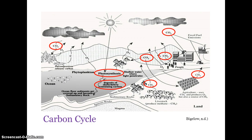Carbon is the fundamental building block of life and the fourteenth most abundant element by weight at 0.032% of total Earth mass. The carbon cycle has a gaseous phase including carbon dioxide (CO₂) and methane (CH₄). Carbon dioxide is taken in during photosynthesis and is respired by almost all organisms. Carbon also regulates the acidity of oceans.